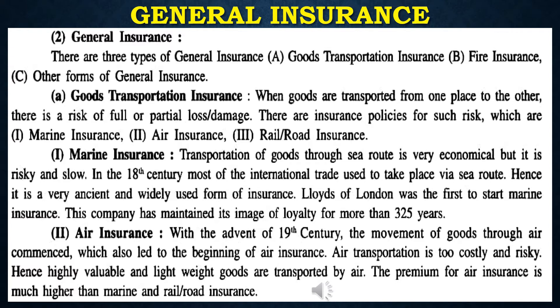General insurance is of three types: goods transportation insurance, fire insurance, and other forms of general insurance. Goods transportation insurance covers the risk of full or partial loss or damage when goods are transported from one place to another. The insurance policies for such risk are marine insurance, air insurance, and railroad insurance.